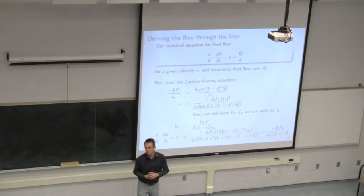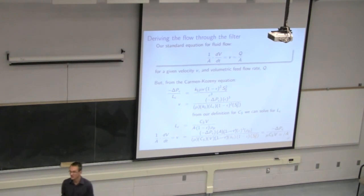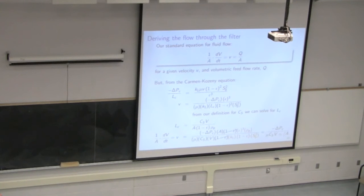Alpha lumps up all the problematic constants into one single number, and that's what we're going to look at today: how do we estimate alpha? We're going to find that alpha is not constant either, so we'll have to bear that in mind.